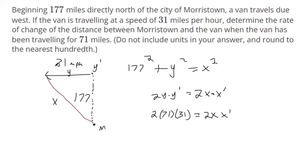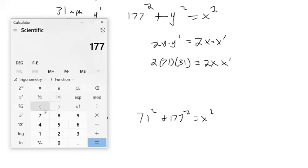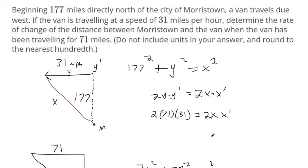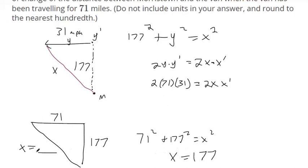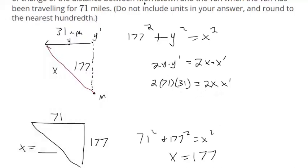And then this x variable, I think we could solve that. If this is 71, and if this is a constant of 177, then we could use the Pythagorean theorem to find out what x is at this instant. So 71 squared plus 177 squared equals x squared. If we solve for x there, you get 177. Oh, that can't be right. I did something wrong because the hypotenuse can't be the same there. Let me try that again, 177 squared and 71 squared. Add those together and then take a square root. Okay, that sounds more right. 190.709, a bunch of decimals. So that's what the particular x value is at that instant.